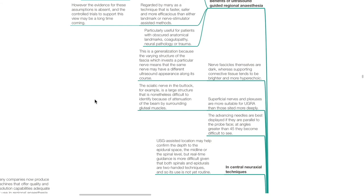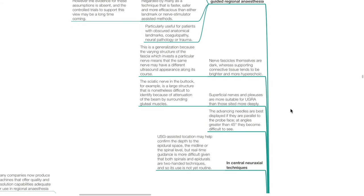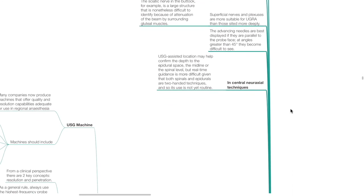Nerve vesicles themselves are dark, whereas supporting connective tissue tends to be brighter and more hyperechoic. This is a generalization because the varying structure of the fascia investing a particular nerve means the same nerve may have a different ultrasound appearance along its course. Superficial nerves and plexuses are more suitable for UGRA than those sited more deeply. The sciatic nerve in the buttock, for example, is a large structure that is nonetheless difficult to identify because of attenuation of the beam by surrounding gluteal muscles. Advancing needles are best displayed if parallel to the probe surface; at angles greater than 45 degrees, they become difficult to see. In central neuraxial techniques, ultrasound-assisted location may help confirm the depth to the epidural space, the midline, or the spinal level, but real-time guidance is more difficult given that both spinals and epidurals are two-handed techniques, so its use is not yet routine.